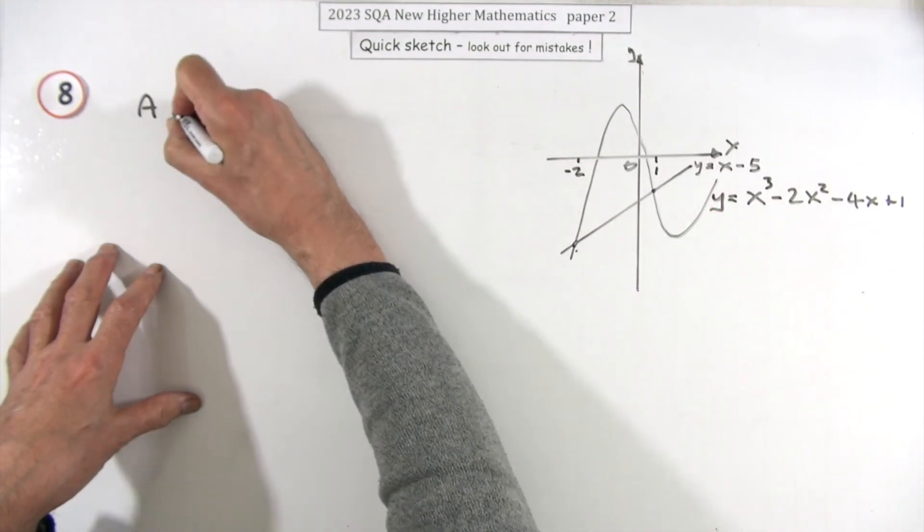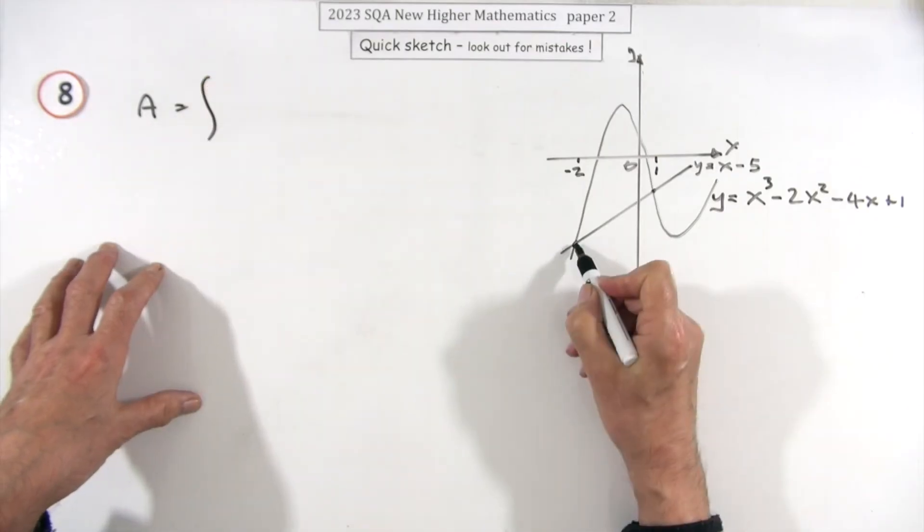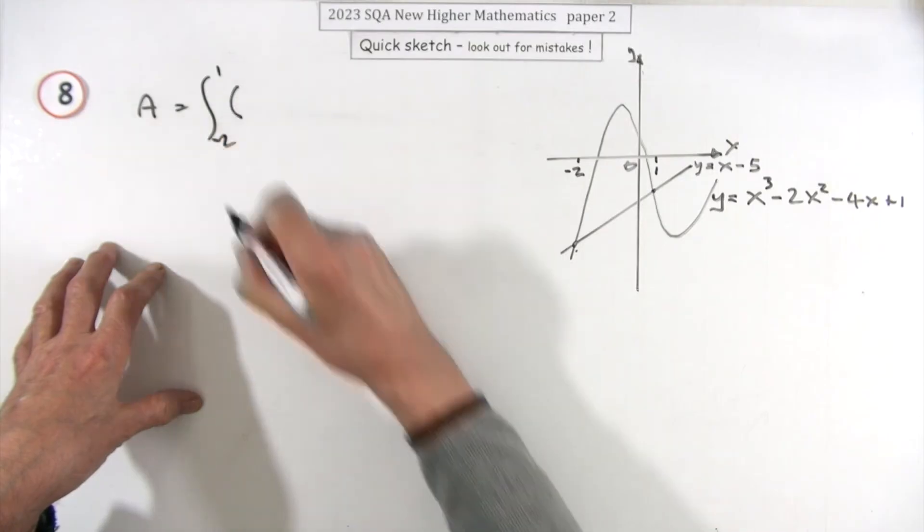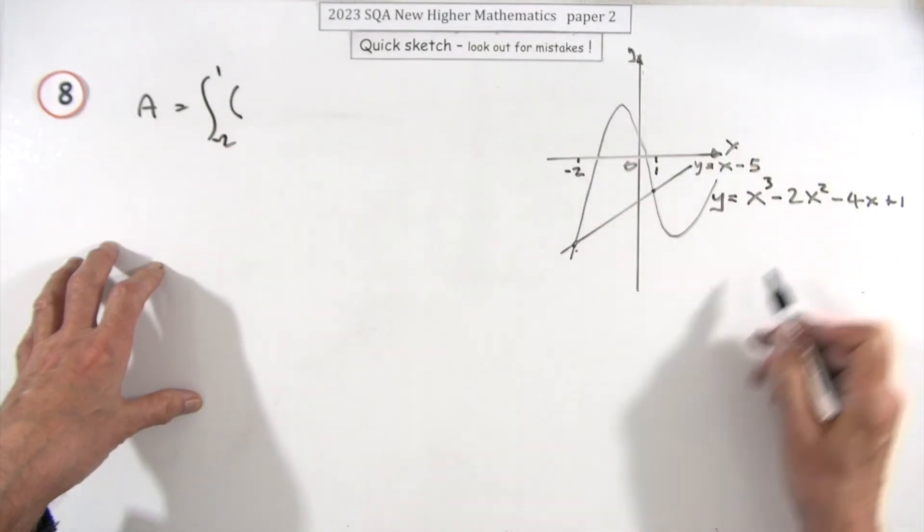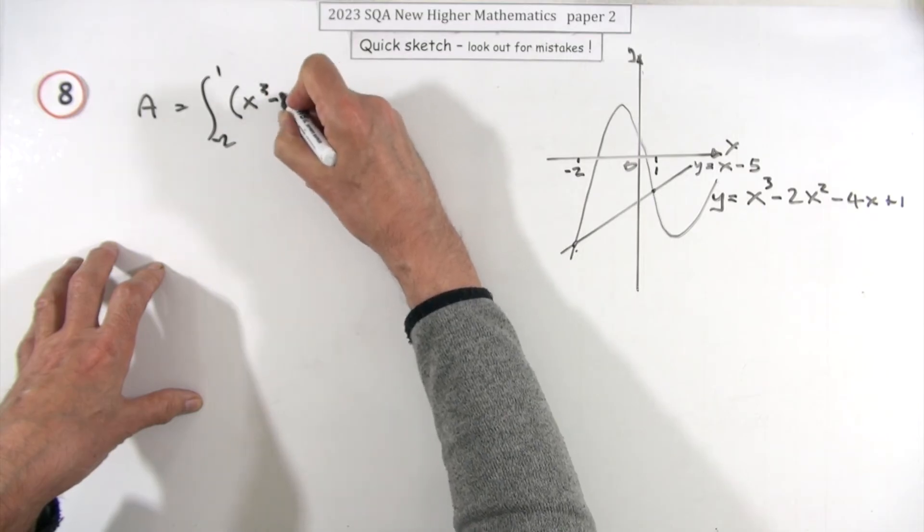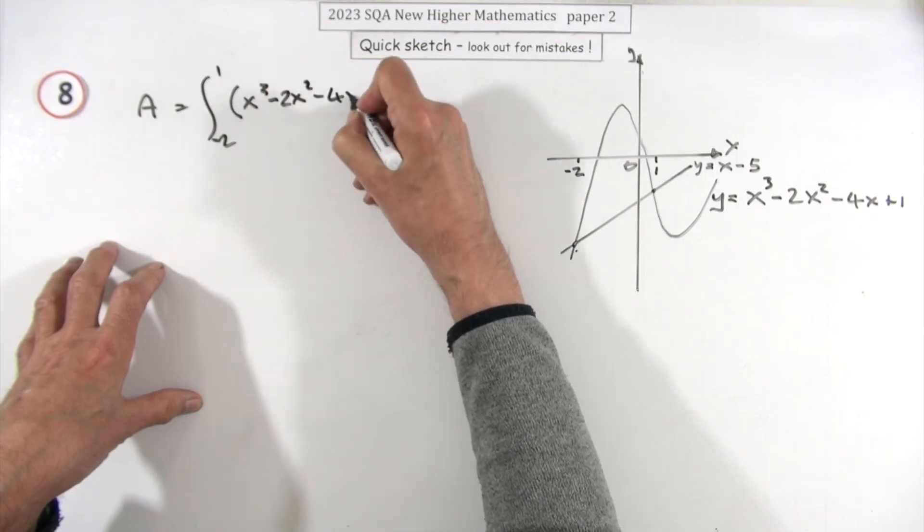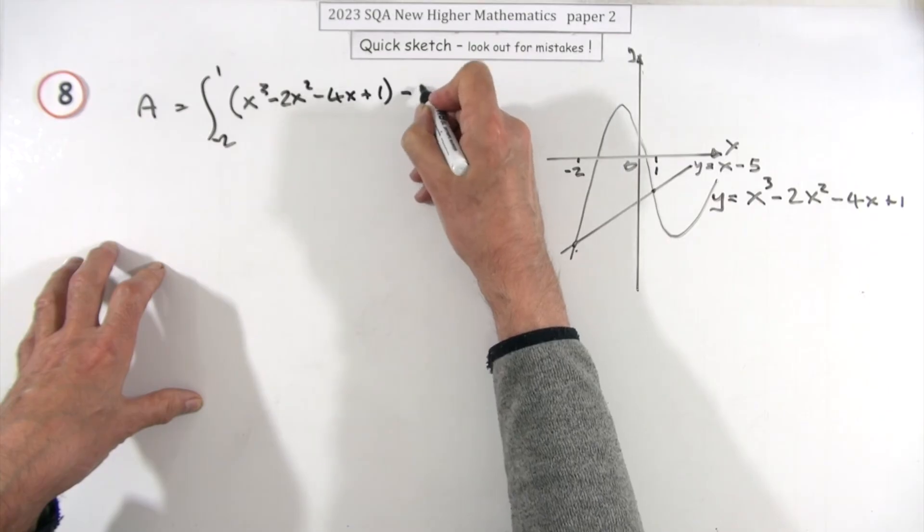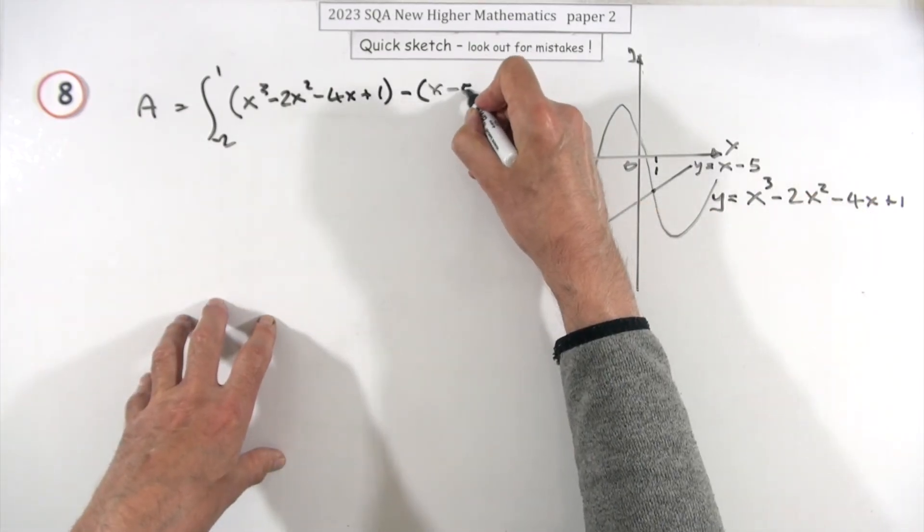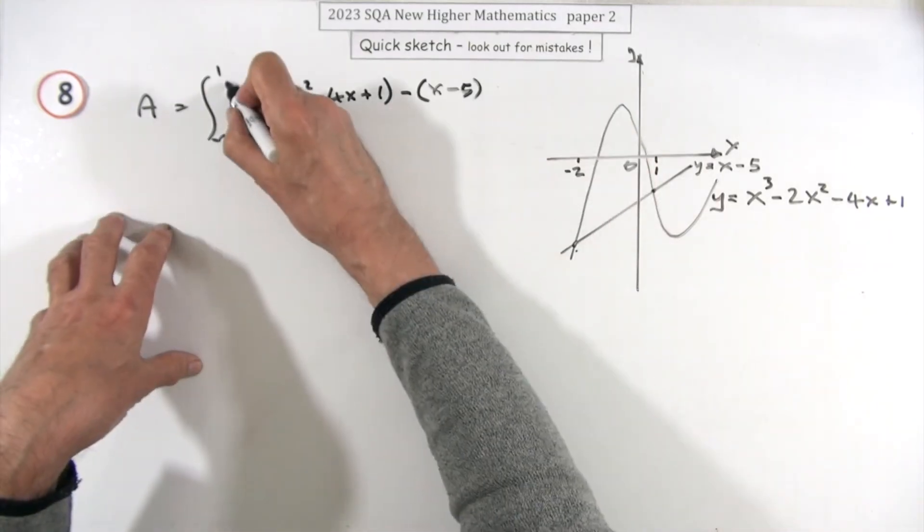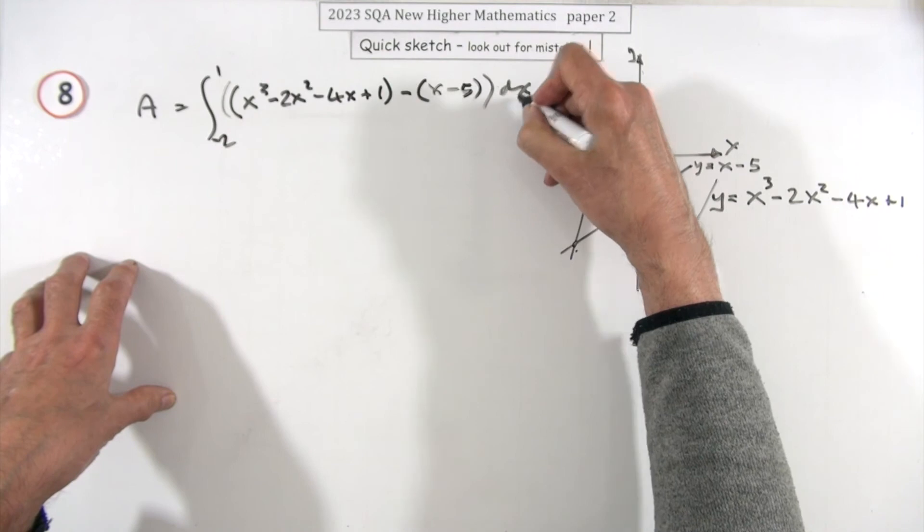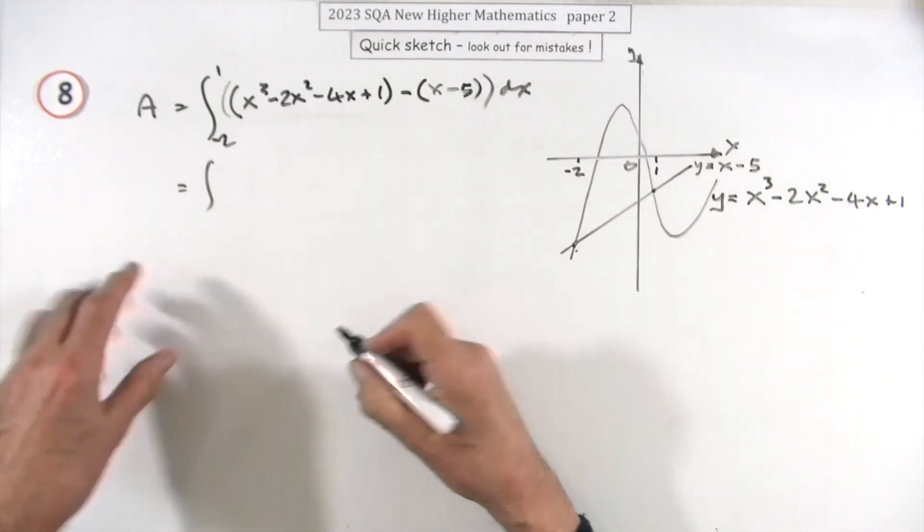Well, it's just an area, but where do I start? When x is -2. Where do you finish? When x is 1. What's the equation of the top? The top y-coordinates: x³ - 2x² - 4x + 1. From that, take away what are the lower ones: x - 5. Don't forget to put it in that bracket to stop that 5 escaping its subtraction, all multiplied by dx.